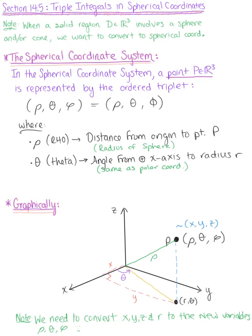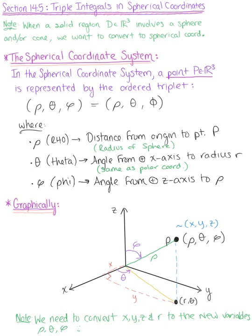Last but not least, we have phi — sometimes pronounced phi. It is still debated amongst mathematicians to this day. Phi is the angle from the positive z-axis to rho. Graphically, from the positive z-axis to that length rho, this is the angle phi. From here, we can see that we've created a new right triangle in the xy-plane.